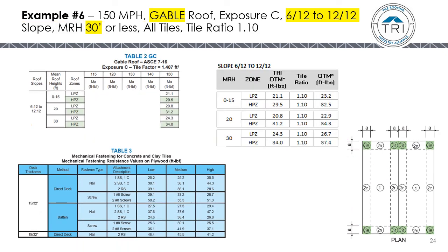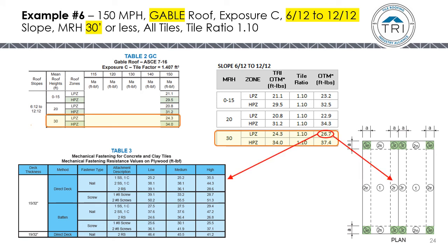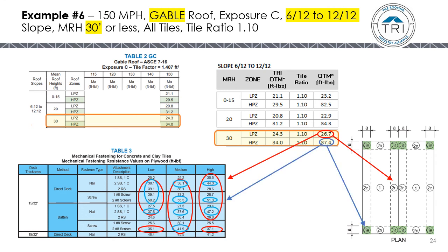In example six, 150 mile per hour gable roof, Exposure C, on a steep 6:12 to 12:12 roof slope, 30-foot mean roof height, looking at all tiles. We go to Table 2GC, get our uplift moment, and factor in the tile ratio. Reviewing Table 3 for the LPZ, those mechanical fastening methods will work. For the HPZ, the blue circles in Table 3 represent the fastening methods that can be used.